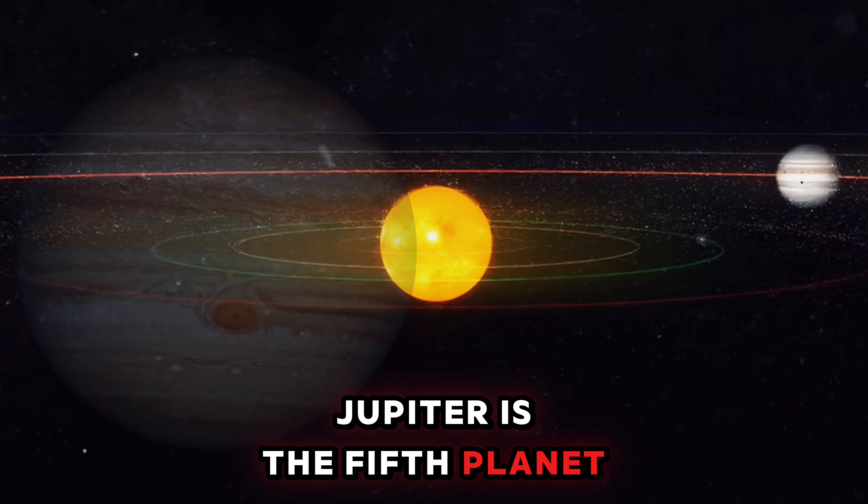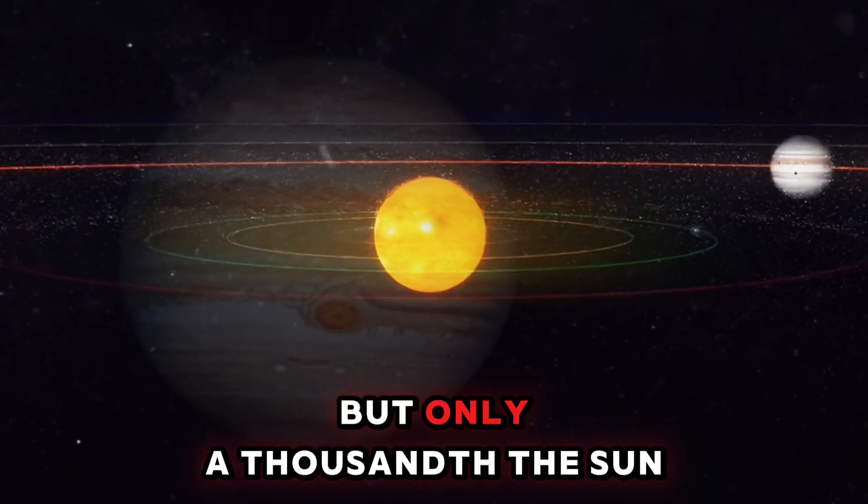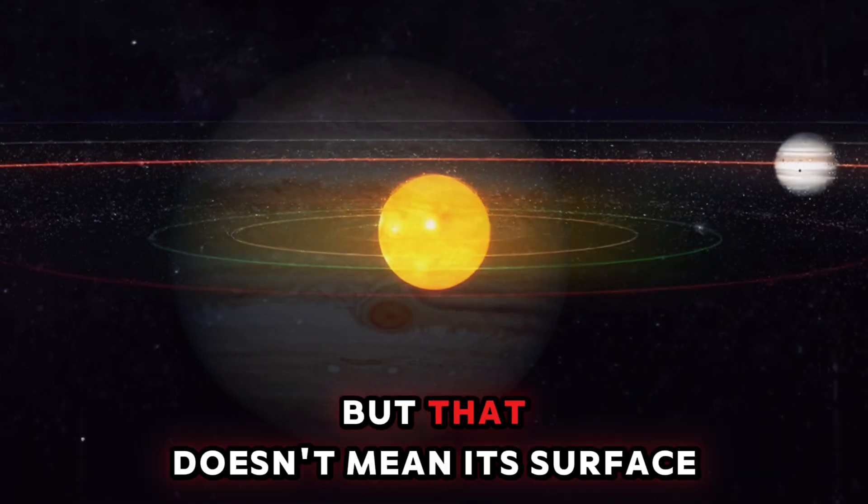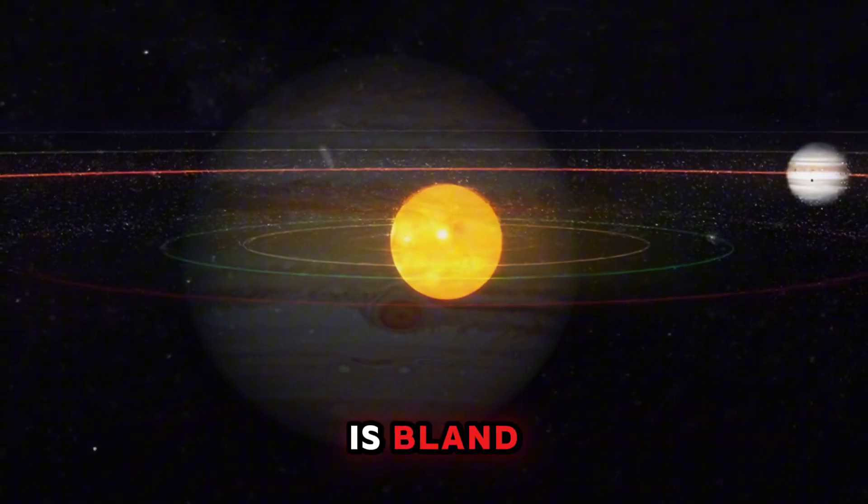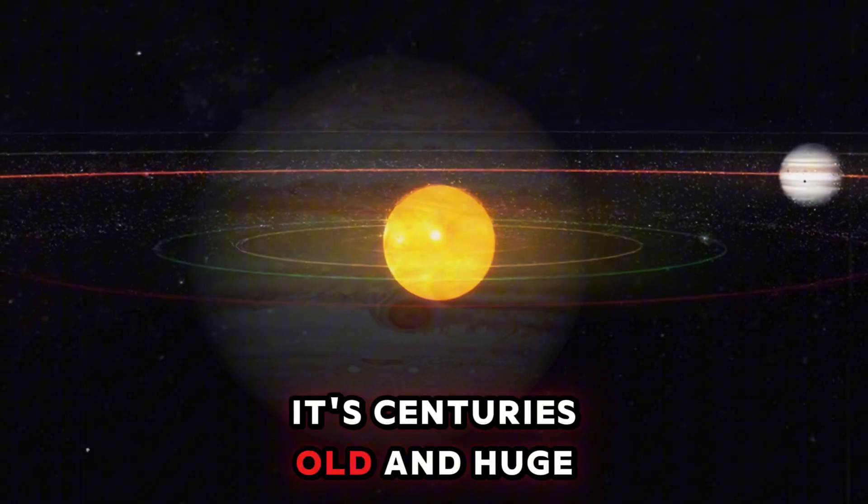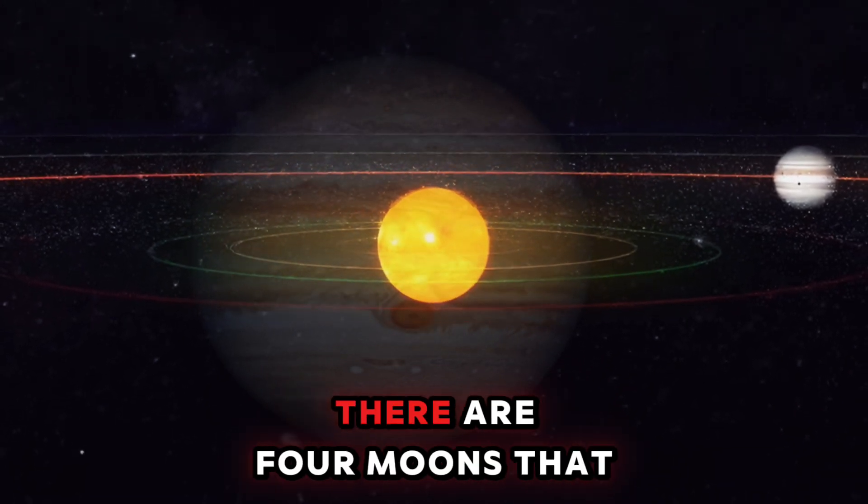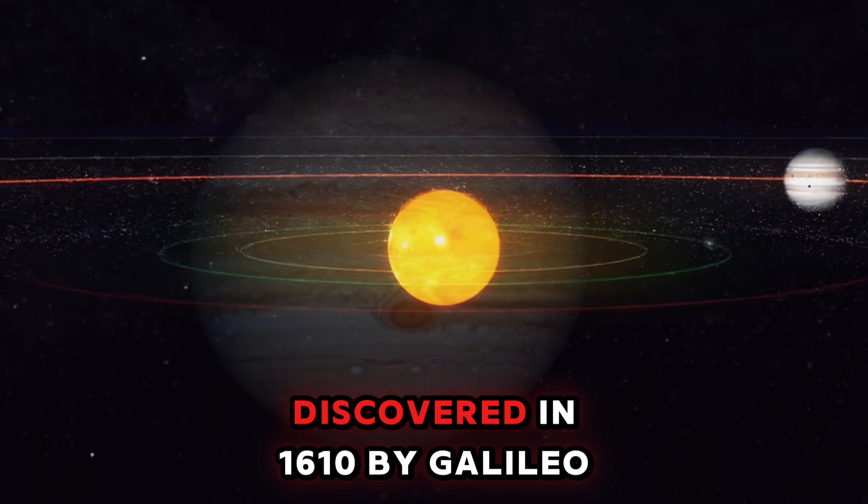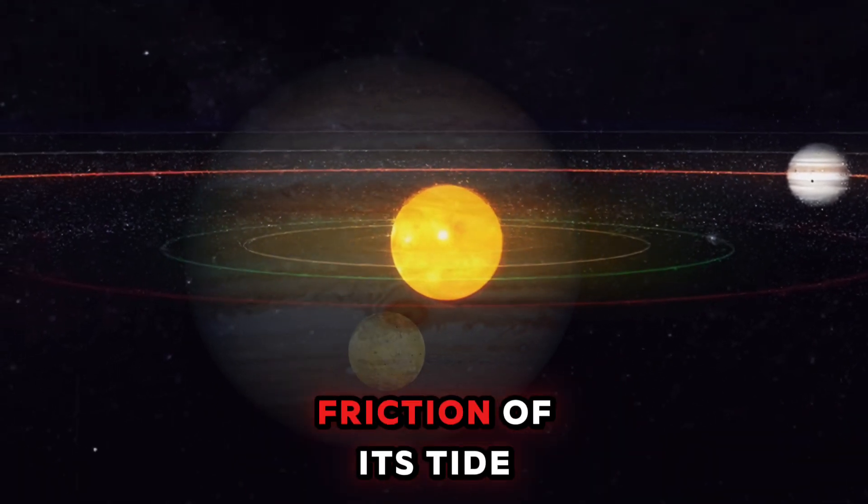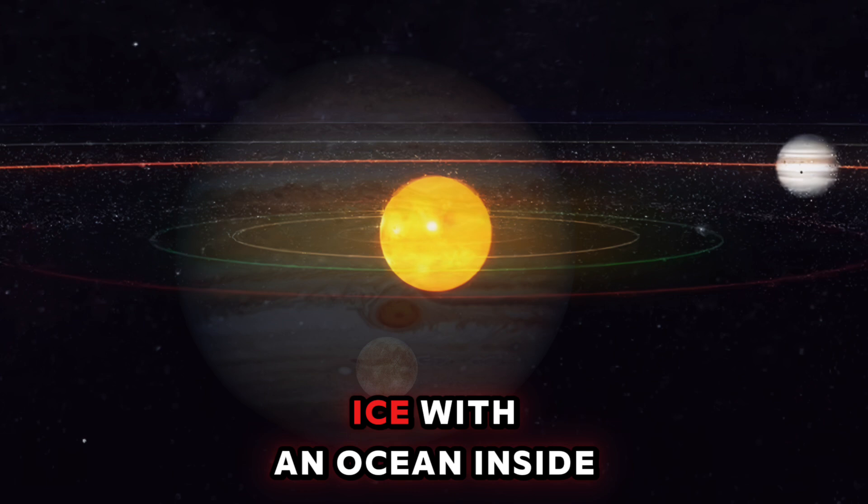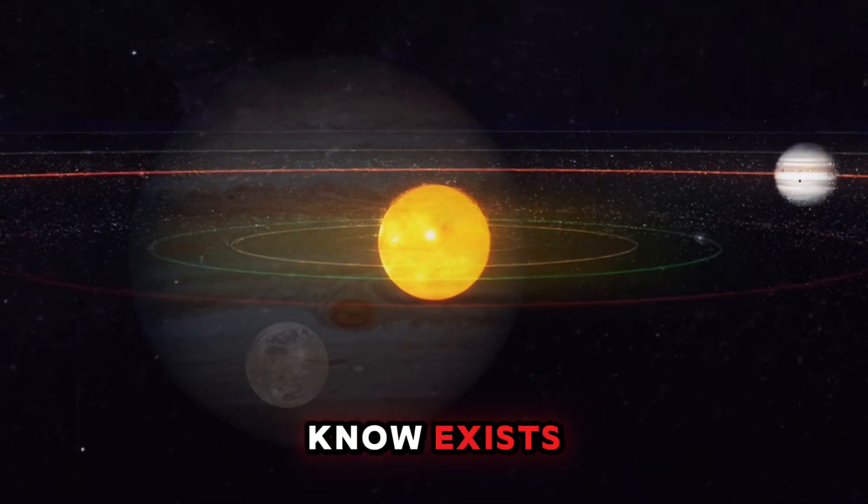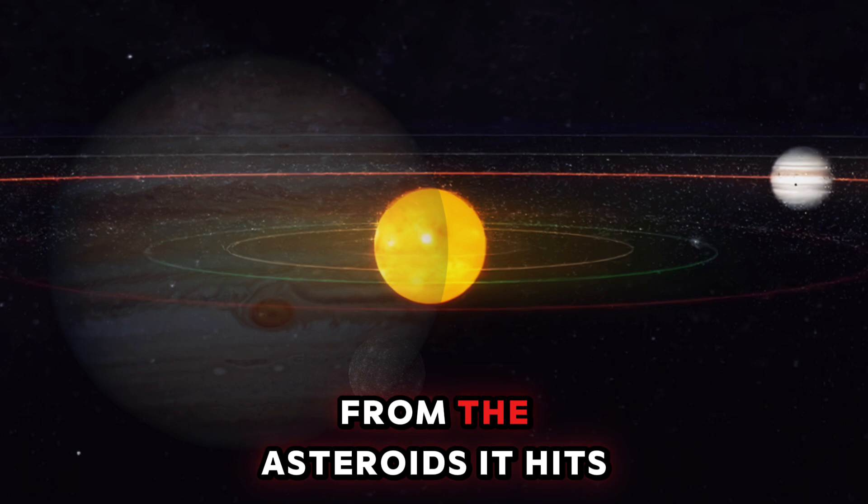Jupiter is the fifth planet. It's the largest one, bigger than all the others combined, but only a thousandth the sun. It's a gas giant, so it has no ground on which to stand, but that doesn't mean its surface is bland. The Great Red Spot is a giant cyclone on its surface—it's centuries old and huge, bigger than the Earth. There are four moons that with binoculars you can see, discovered in 1610 by Galileo Galilei. Io has volcanoes heated by the friction of its tide, and Europa is covered in ice with an ocean inside. Ganymede is the largest moon we know exists, and Callisto is covered in craters from the asteroids it hits.